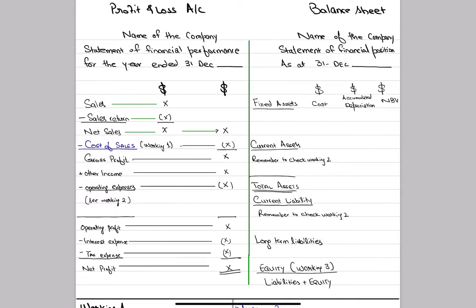In the next step, we have made a trial balance. We have made this information because the company has transactions, the company has processed it and recorded it. Now we have to present it. We have said that there are 5 financial reports, the first two of which are profit and loss account and balance sheet.